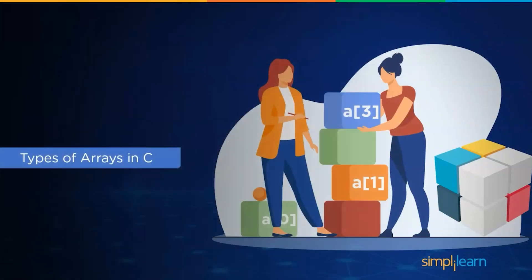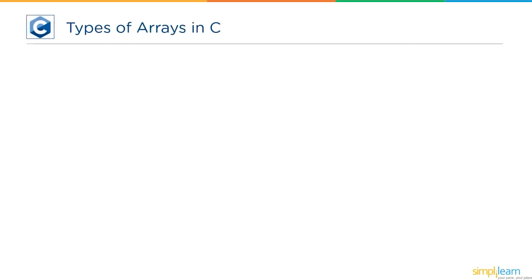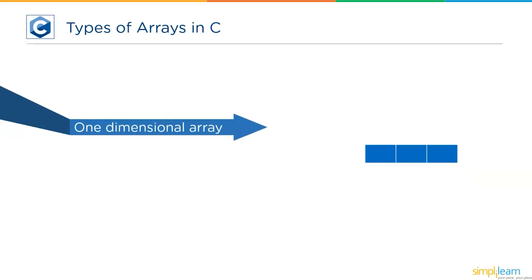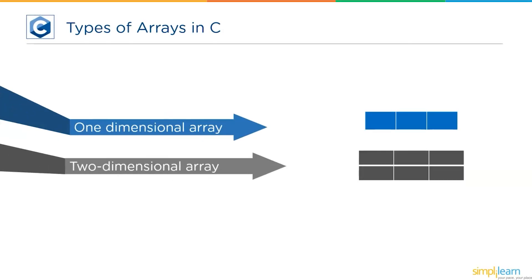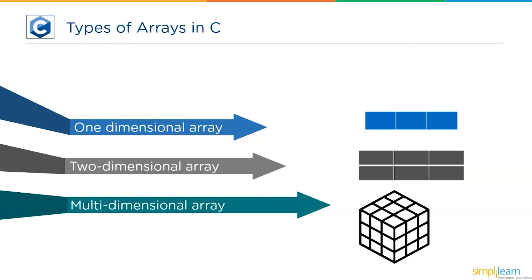Now we know what an array in C is and its declaration, initialization, and the way to access array elements. Let's move ahead and understand the types of arrays in C. Arrays are classified into three types: first, one-dimensional array; next, two-dimensional array; and finally, multi-dimensional arrays. Let us go through them in detail.